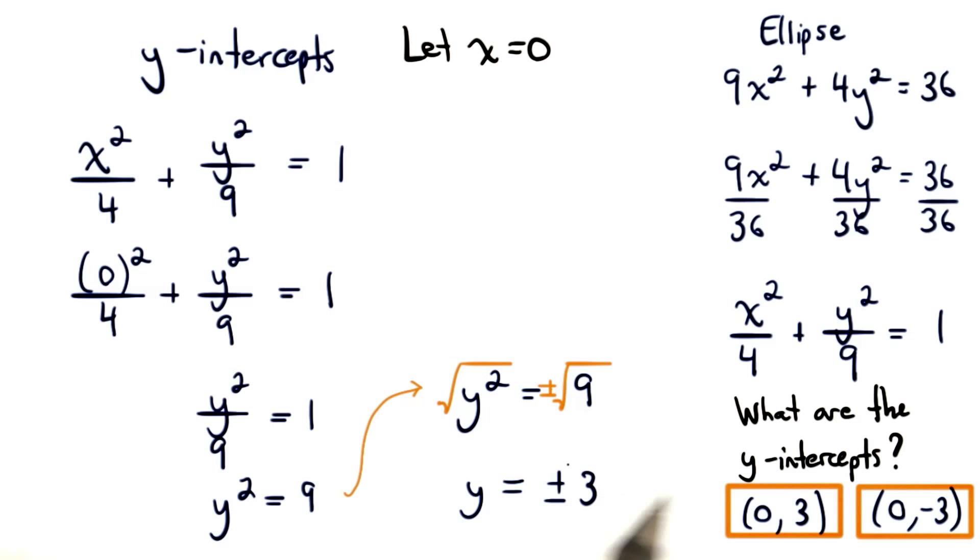We use positive 3 for one of the y-coordinates, and negative 3 for the other y-coordinate. The x-coordinates are both 0.